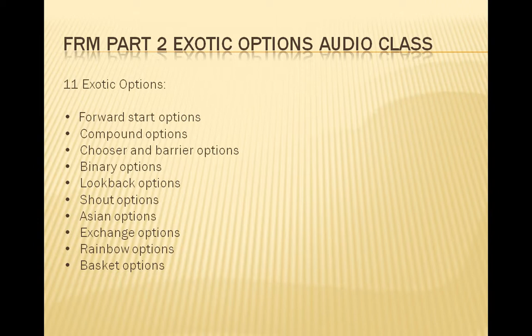An exchange option gives the holder the right to exchange one asset for another — commonly one currency for another. For example, a US investor might hold an option to purchase euros with yen at a specified exchange rate; the option will be exercised if euros are more valuable to the investor than yen. Basket options are options to purchase or sell a basket of securities, which may be defined for individual investors or composed of specific stock indices or currencies. Exotic options involving several assets at once are more generally referred to as rainbow options.